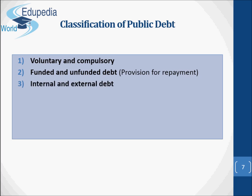Third, internal and external debt — when the government raises revenue by borrowing from within the country, it is called internal debt. Fourth, productive and unproductive debt. Loans on projects yielding income, such as construction of plants, railways, power schemes, etc., are called productive debt. Loans on non-income yielding projects, such as war, famine relief, etc., are called unproductive loans.